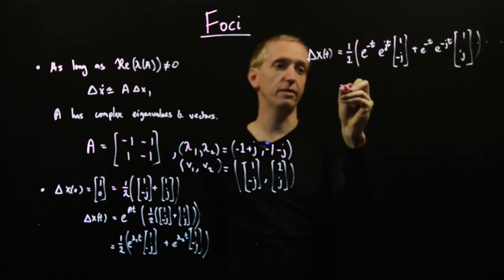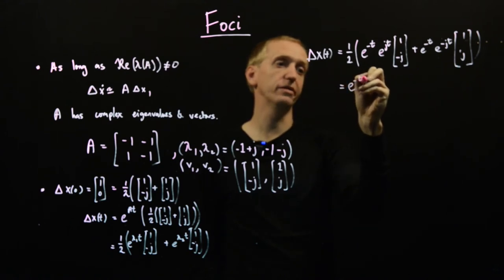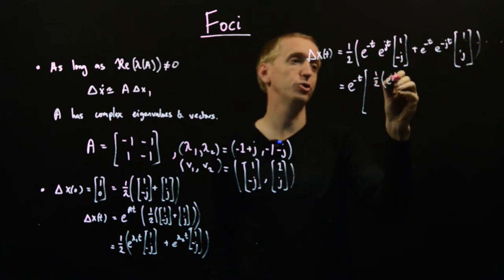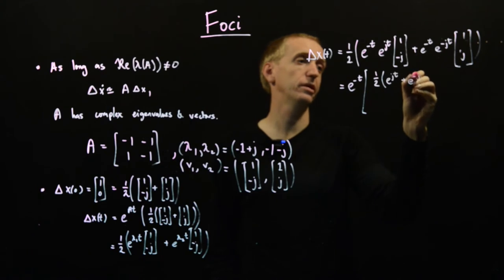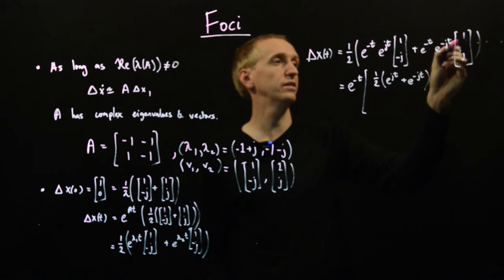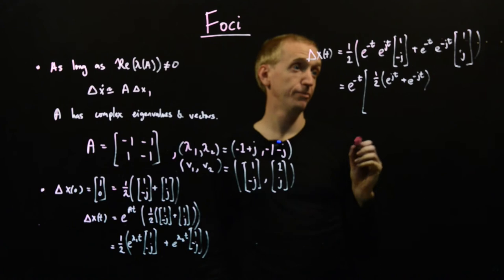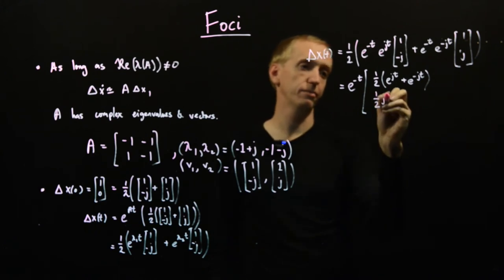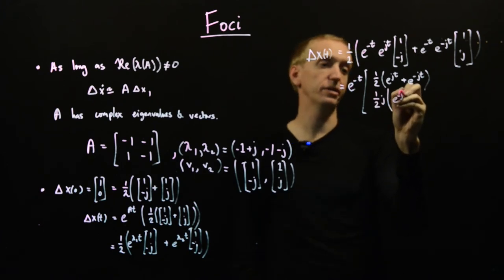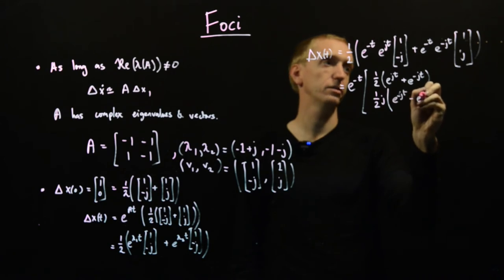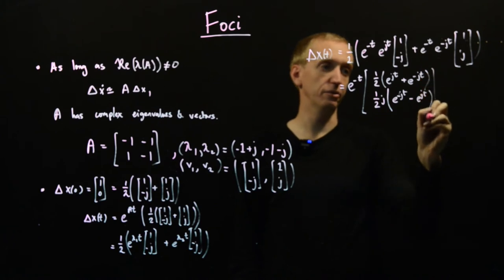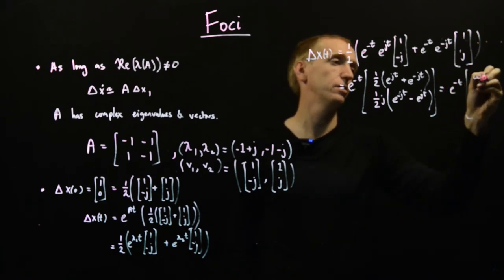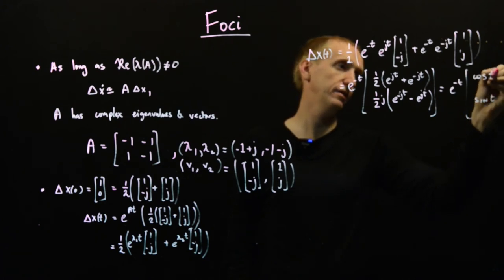Now we're getting really close to something familiar. Let's pull the e^(-t) out. I have 1/2[e^(jt) + e^(-jt)](1, 0) + 1/2 j[e^(-jt) - e^(jt)](0, 1). You go to one of your data books or you dig deep into your memory and you realize that this is just cos(t) and sin(t). Now we have a solution for a particular initial condition: delta x(t) = e^(-t)(cos(t), sin(t)).